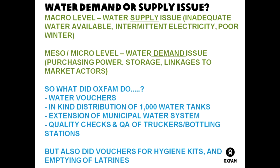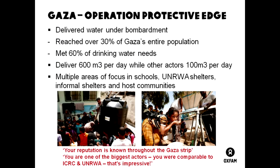In Gaza, extensive preparatory work was done. The national team mapped all borehole operators and reverse osmosis operators, knew the expandability of water trucks and the yield of boreholes, and had a database pre-crisis before Operation Protective Edge in July 2014. Because of that thorough market analysis, Oxfam was able to reach 30 percent of Gaza's entire population during the crisis, meeting 60 percent of drinking water needs — with many other actors recognizing Oxfam's reputation as one of the biggest responders.